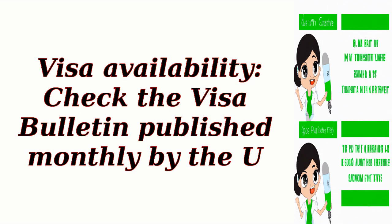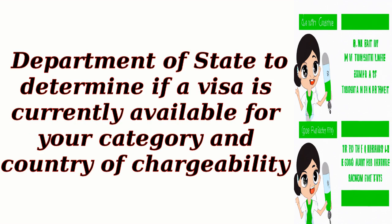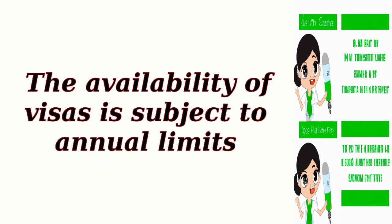Step 4: Visa availability. Check the visa bulletin published monthly by the U.S. Department of State to determine if a visa is currently available for your category and country of chargeability. The availability of visas is subject to annual limits.